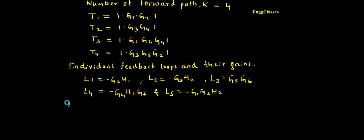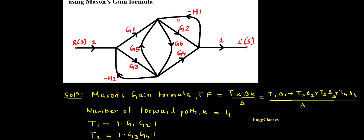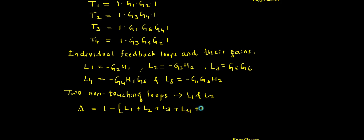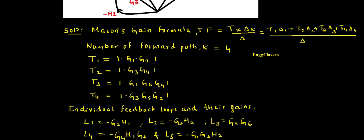Next I have to identify two non-touching loops. The two non-touching loops are L1 and L2. Knowing all these things, I can write the expression for Δ: Δ = 1 − (L1 + L2 + L3 + L4 + L5) + (L1 · L2). There are no three non-touching loops, so I stop here.